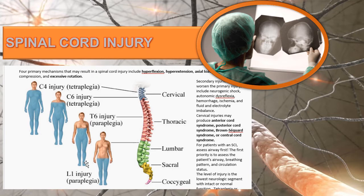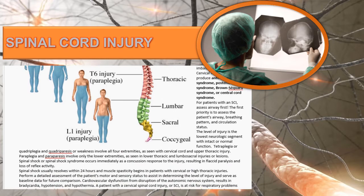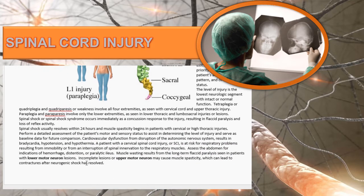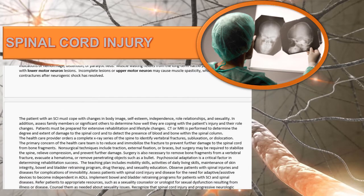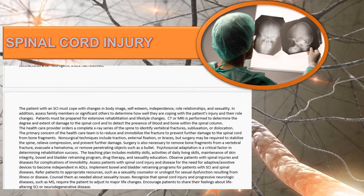The textbook covers different cervical injuries and spinal cord injury syndromes in further detail, including anterior cord syndrome, Brown-Séquard syndrome, and central cord syndrome. For patients with spinal cord injury, assessing the airway and mobilizing the patient is essential, but airway, breathing pattern, and circulation status are the most important priorities.